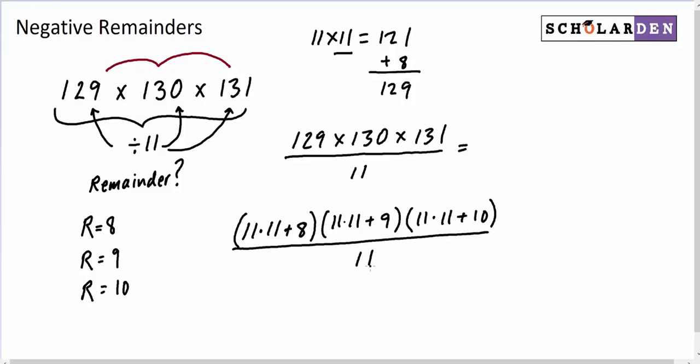Now, you may be able to see or remember from the binomial theorem that when you multiply these three things together, you're going to get a bunch of terms, and the last term is going to consist of 8 times 9 times 10. Every other term will have one of these 11s multiplied in it and therefore will be divisible by 11.